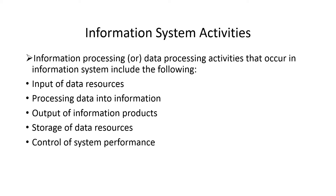First, let's look at information system activities, also known as data processing activities. The activities include: input of data resources, processing data into information, output of information products, storage of data sources, and control of system performance.